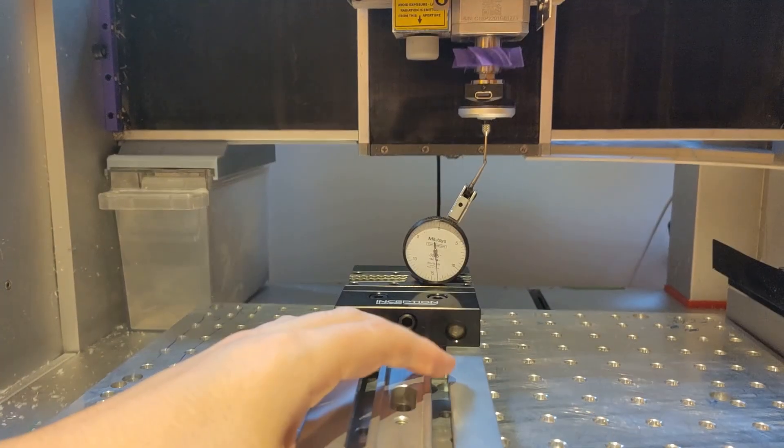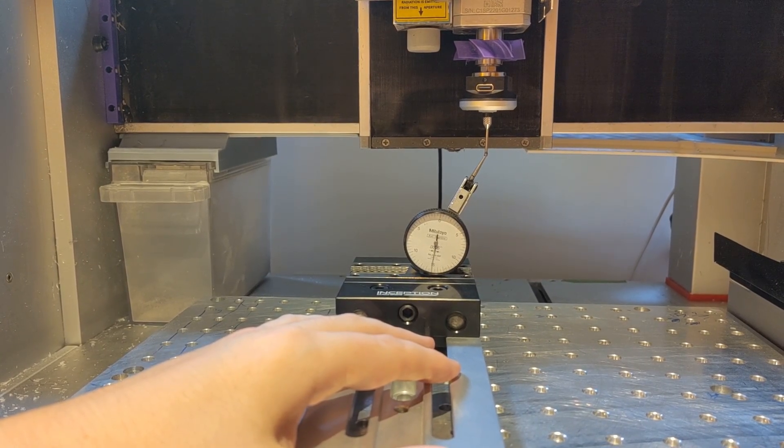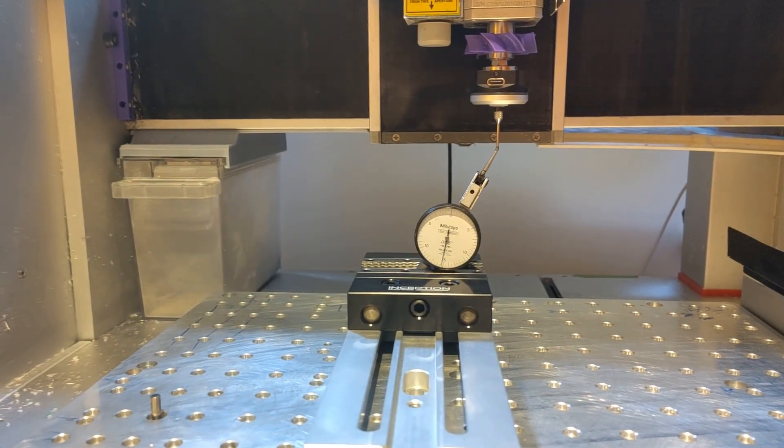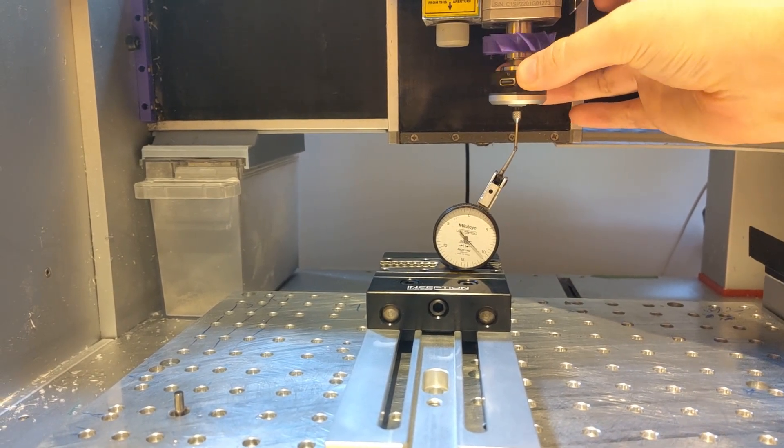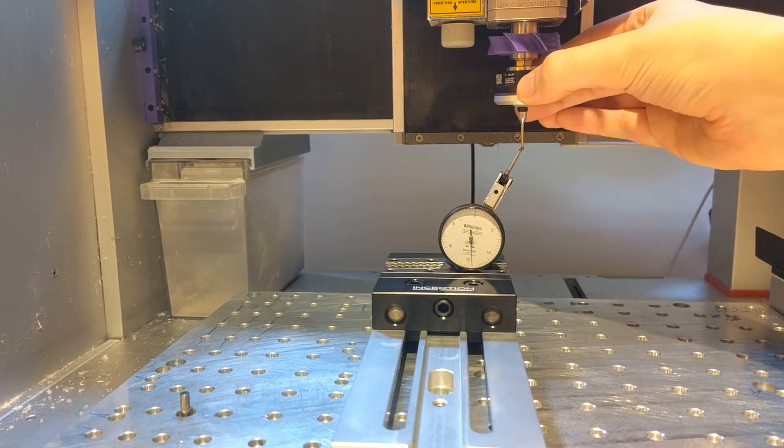Our first method of centering the probe tip is to use a dial test indicator. With the indicator mounted firmly into a movable object and the probe installed but unplugged, touch the end of the indicator sphere to the end of the probe sphere and preload it slightly so that when you turn the probe, the reading changes.